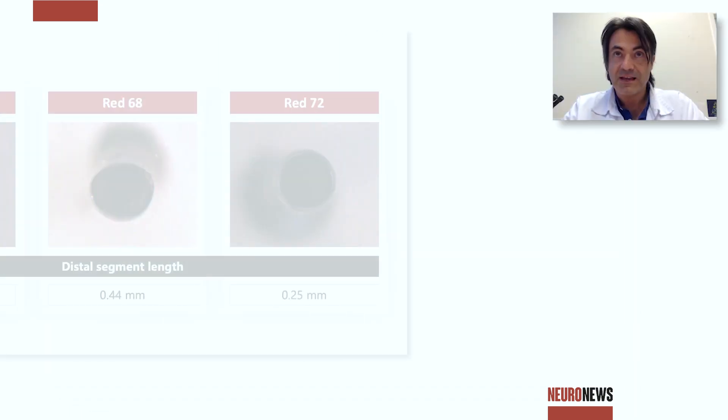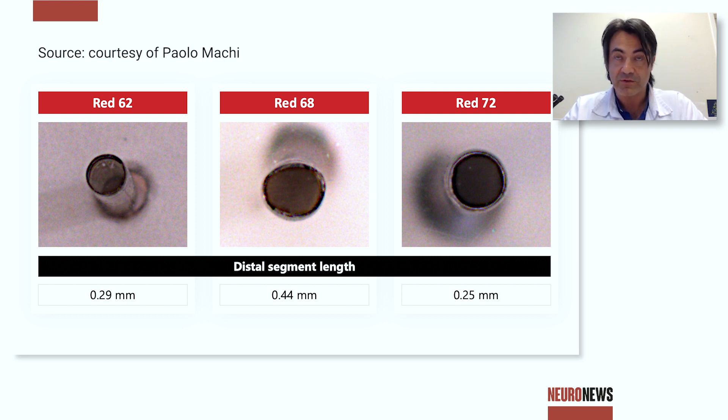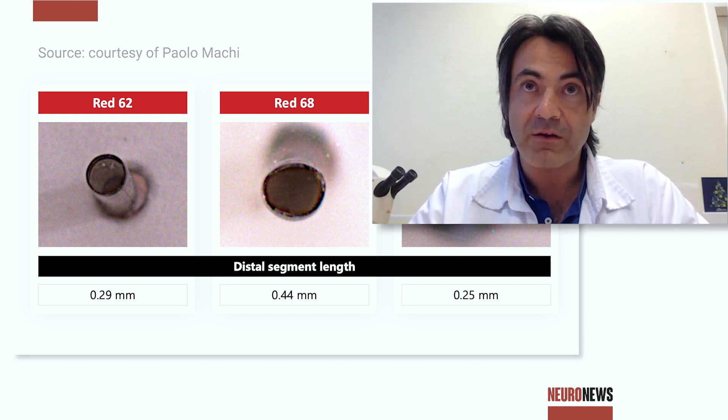In a sense, it's the behavior of the catheter that determines the success of the flow rate and aspiration force. But the very first objective during a thromboaspiration procedure is to get in contact with the clot. So trackability is probably the most important characteristic for an aspiration catheter or a catheter in general.